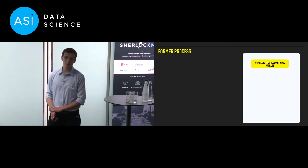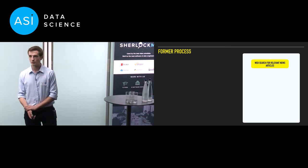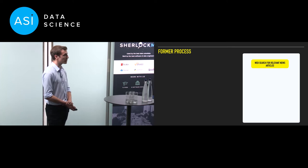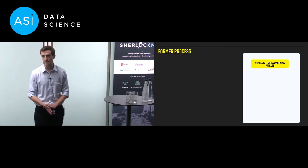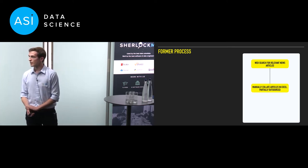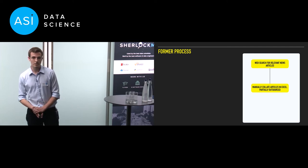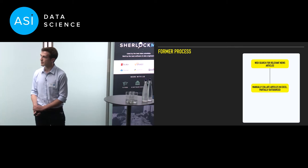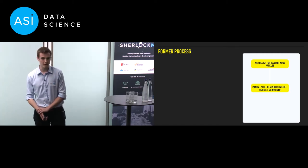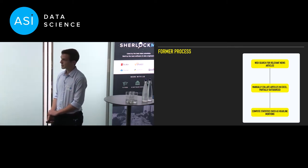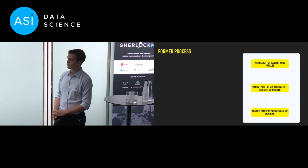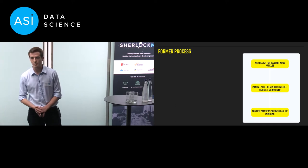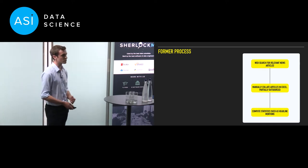Let me first take you through the former process — this is what Miguel used to do. First, using a media monitoring service, he would do a web search for articles that mentioned Amnesty. Then he would manually collate all of the results into a big Excel spreadsheet. This process is so laborious that recently Amnesty started partially outsourcing it to a third party at some expense. Finally, once all the data had been collated, he would compute some simple statistics such as headline mentions, number of hits for each story, and so on.